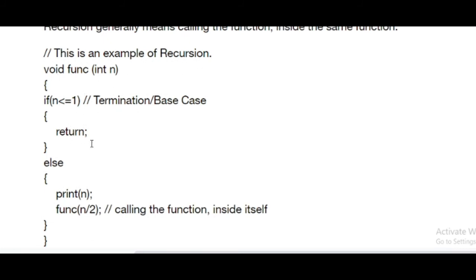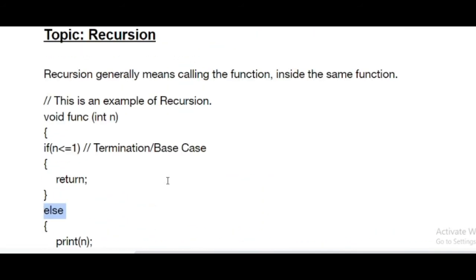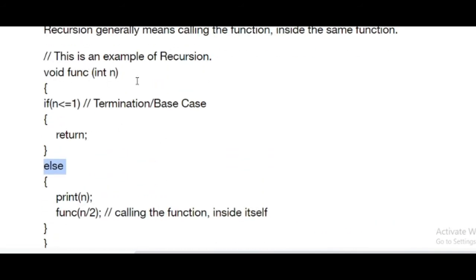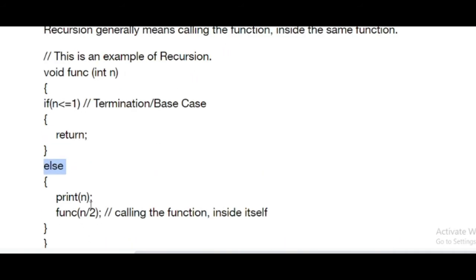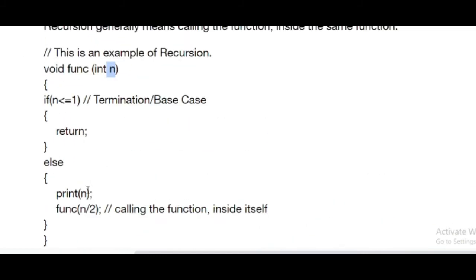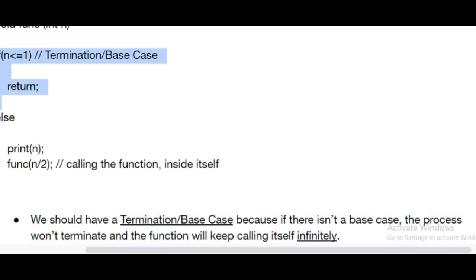Recursion means calling a function inside the same function. This is an example of recursion where void function(n) - if n is smaller than or equal to 1, then that case would be return nothing. But if n is greater, it will invoke the function again. That's how the calling of function takes place. The void function will be invoked with int n by 2. That's how recursion works, and that is very good and very interesting. We should have a termination base case because if there isn't a base case, the process won't terminate. If you don't use this base case, n by 2 will go on forever till infinity and your program will crash definitely.